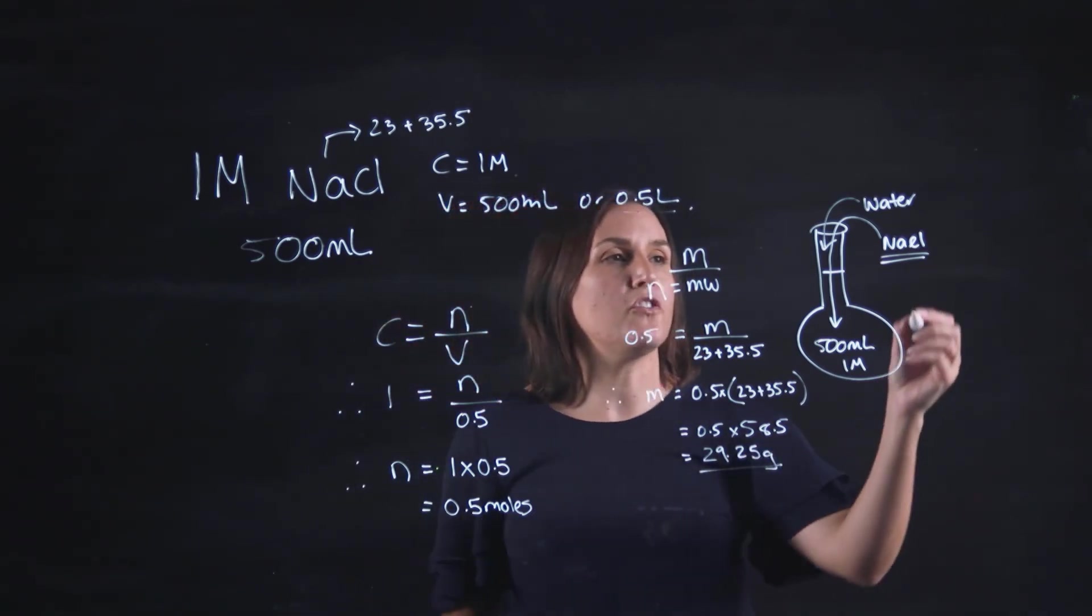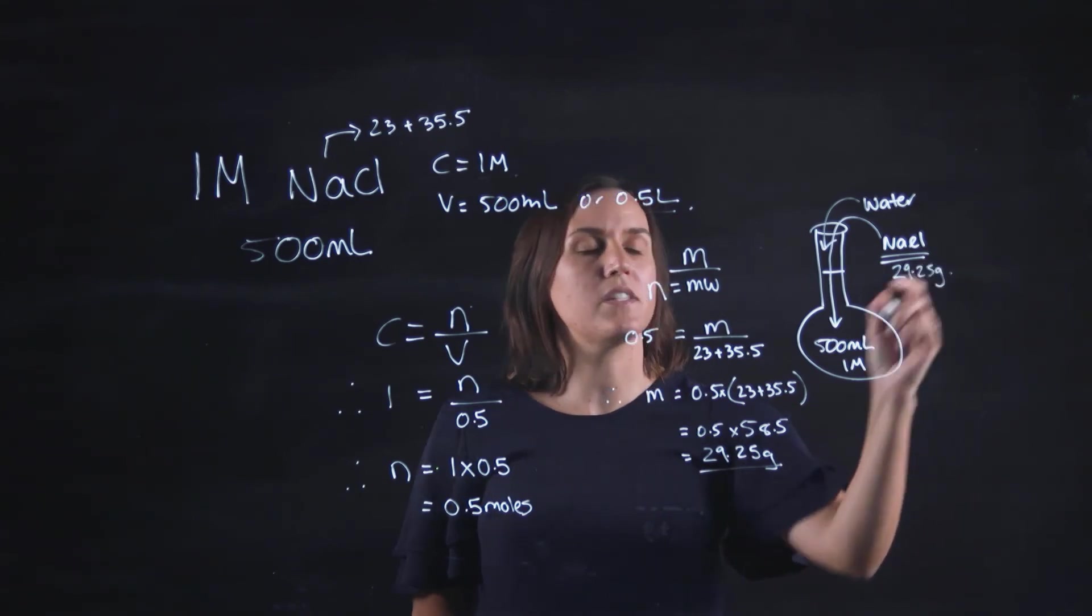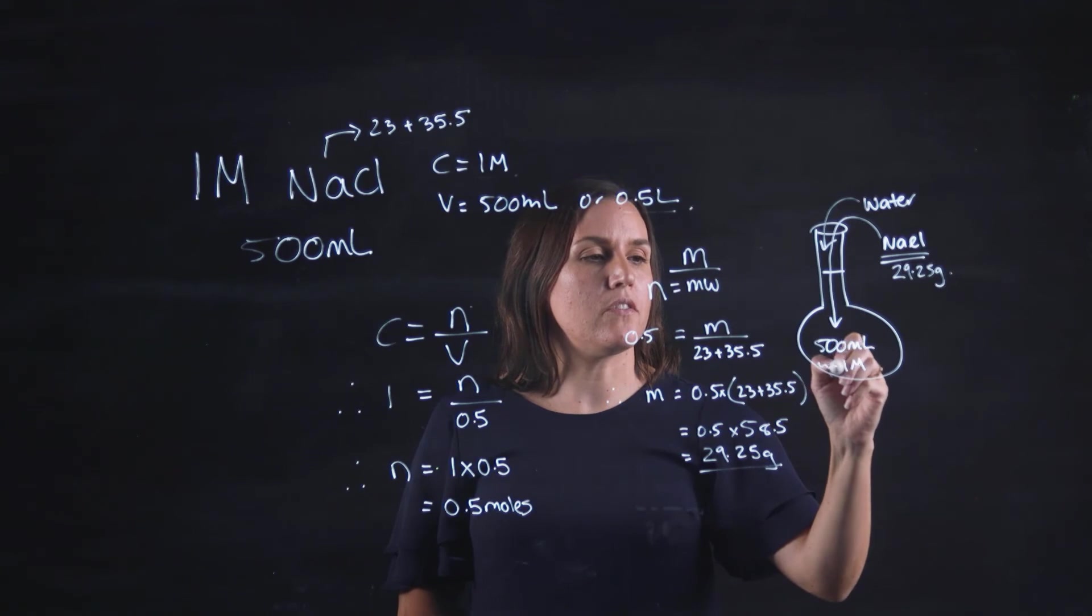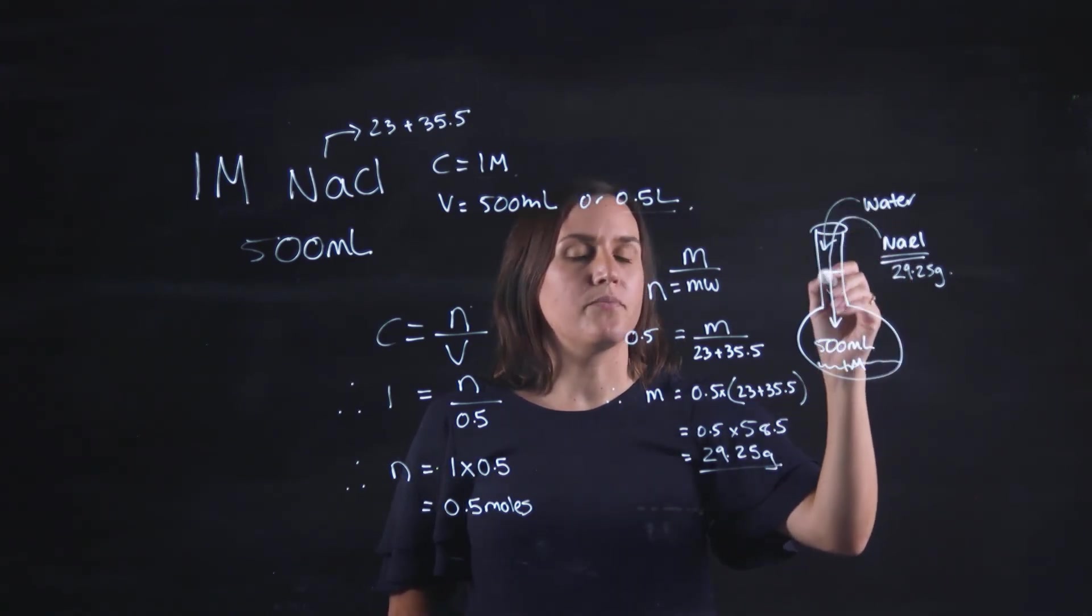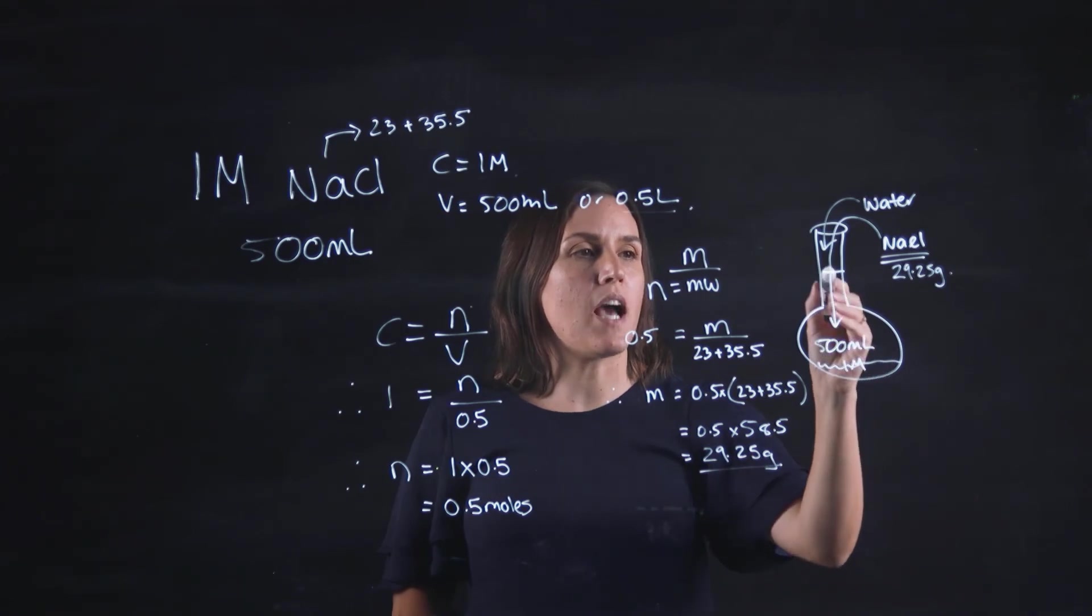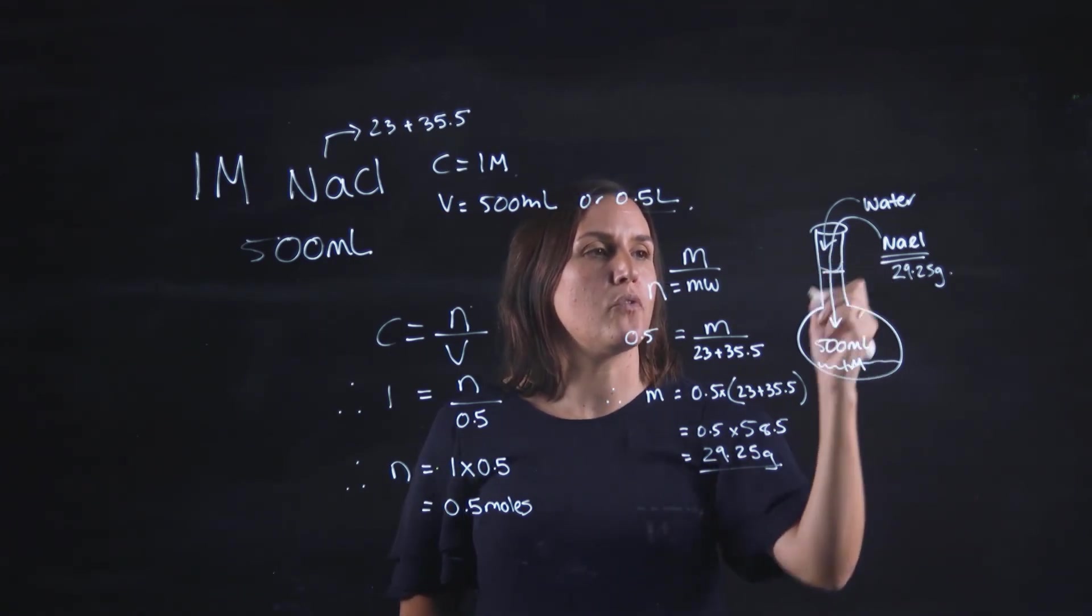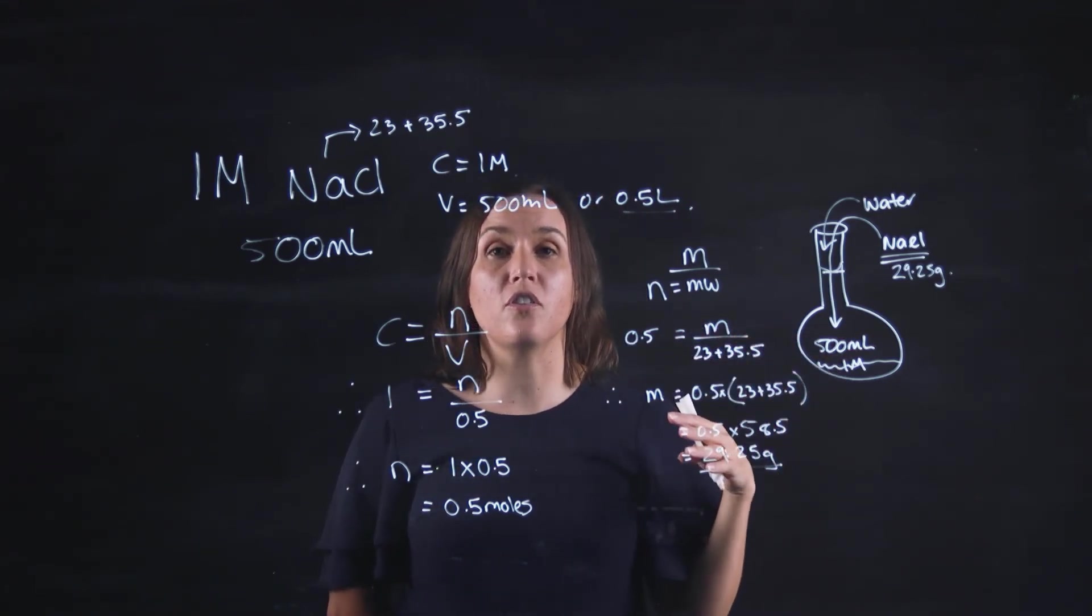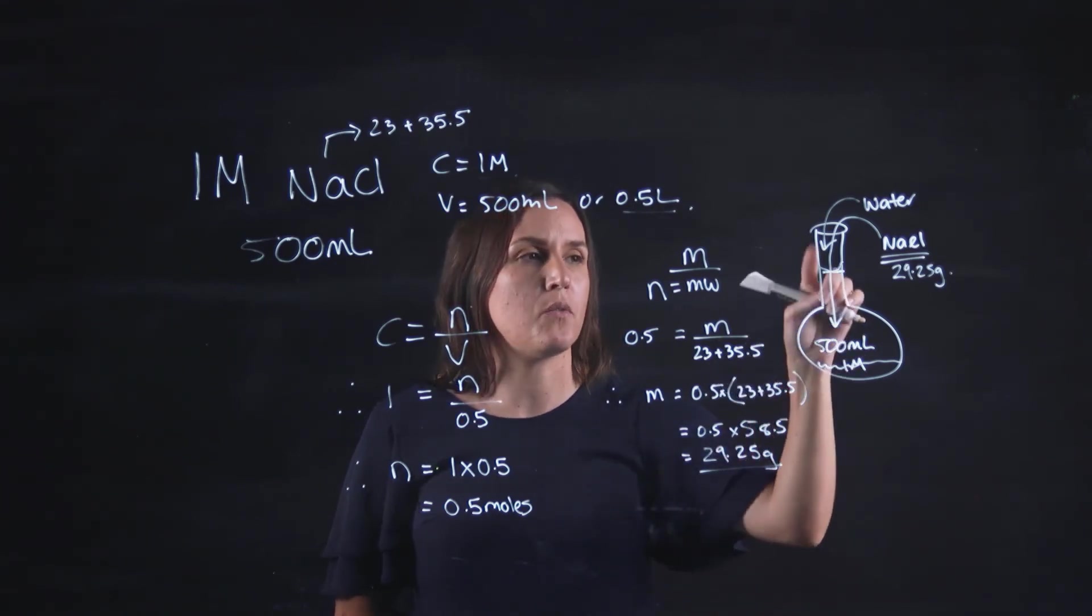So I would need to add in 29.25 grams of sodium chloride. That would go in first and it would sit down the bottom here as a solid and then I would add water. So the final volume will be up to this line here so the bottom of the meniscus that will form will line up exactly on that line. If I overshoot that line I will need to tip that out and start again, so very carefully when I'm adding this up.